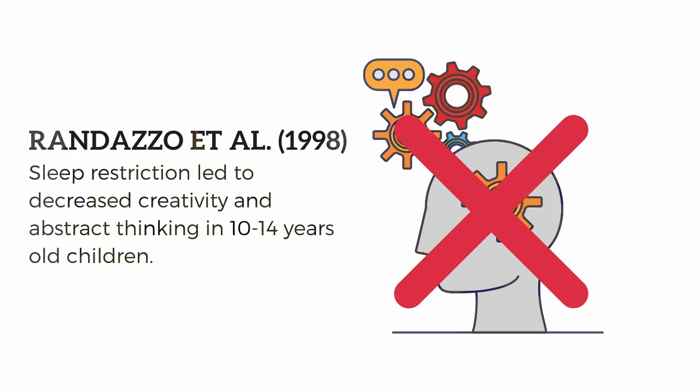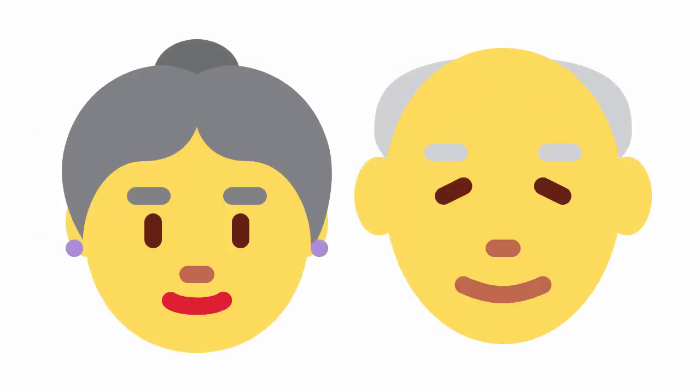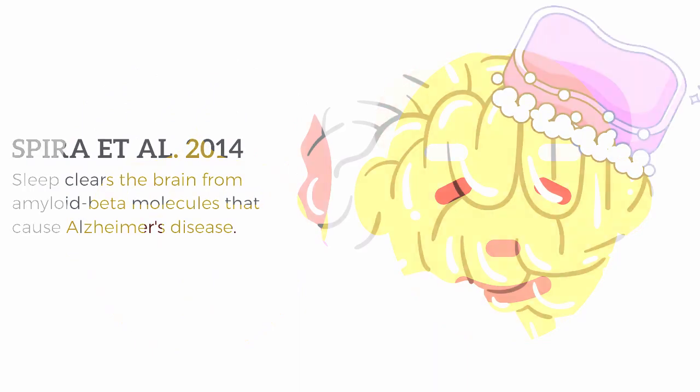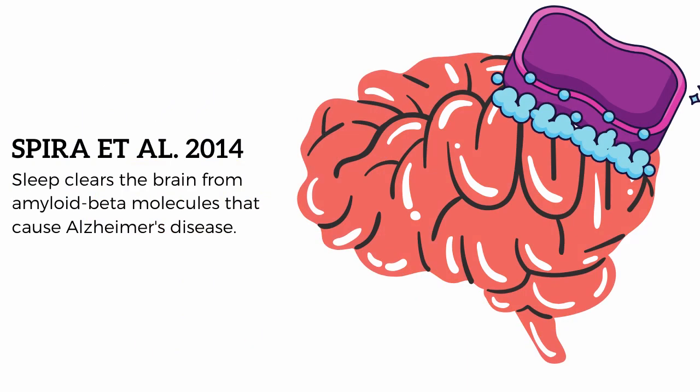In adults, sleep was found to clear molecules in the brain called amyloid beta that causes Alzheimer's disease. So, poor sleep is a risk factor for Alzheimer's disease and dementia.